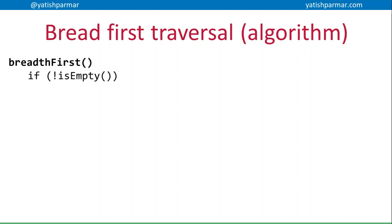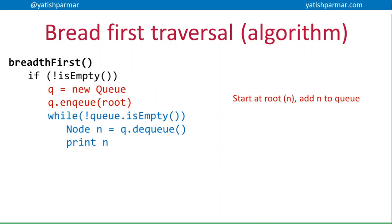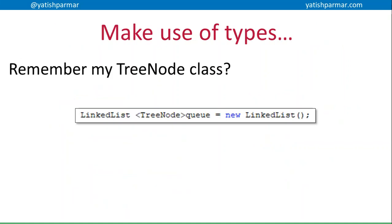The algorithm looks like this: if my tree is not empty, I create a new queue and enqueue the root. Then while my queue is not empty, I dequeue the head of the queue, output that node, and if my left pointer is not null I add the node at the left to the queue. If my right pointer is not null, I add the node at the right to the queue. That's it — simple and straightforward.